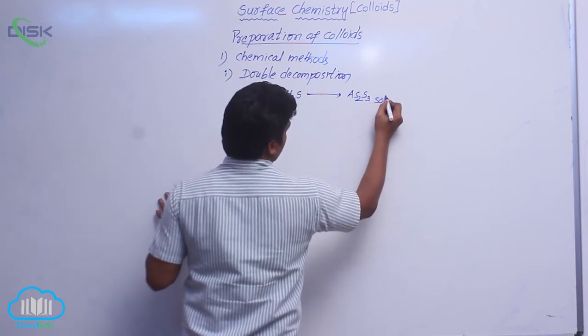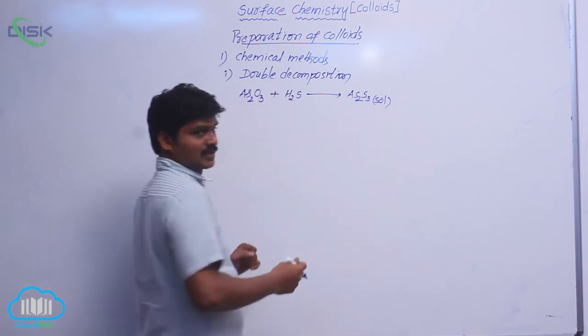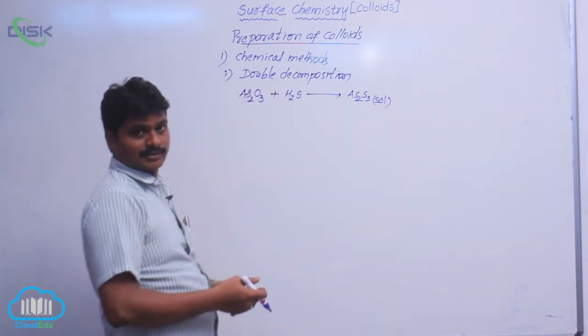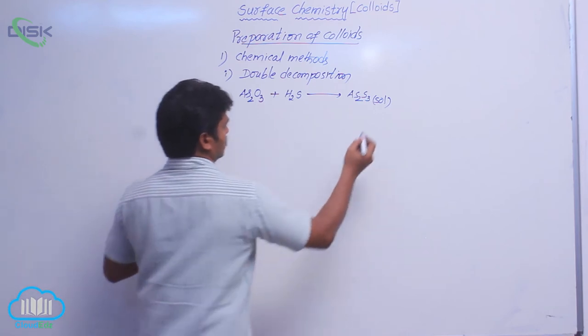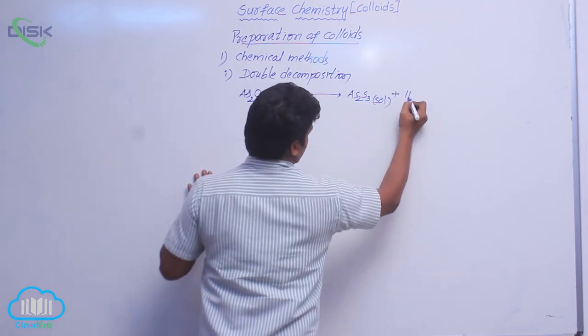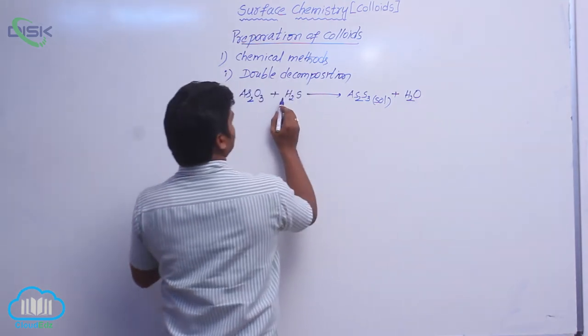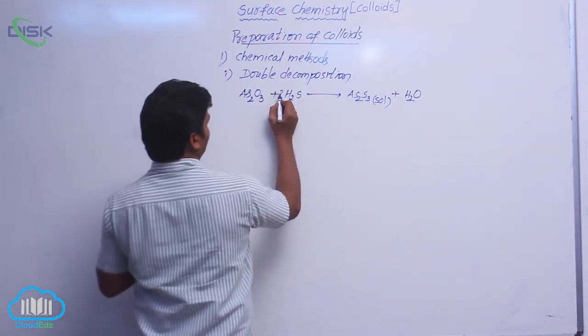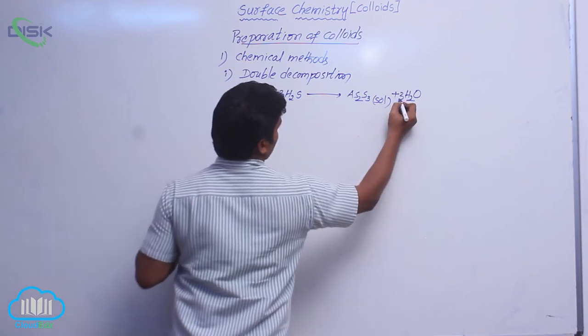Sol means colloidal solution. Solid in liquid type colloidal solution is called sol. Along with it, H2O is also formed, H2O liquid. To balance it, take 3 moles, then it is 3 moles water.